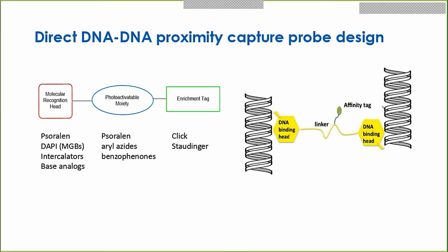That's why we developed this direct DNA proximity capturing photocross-linking probe. The general design consists of three parts. The first part is the molecular recognition head, which can be psoralen, DAPI, intercalators, or DNA base analogs. The second part is a photoactivatable moiety, which can use reactions from psoralen with DNA, aryl azides, or benzophenones. We have also included an enrichment tag, which can use click chemistry or biotin chemistry. The general design features two heads with molecular recognition units for the DNA and an affinity enrichment tag in between.